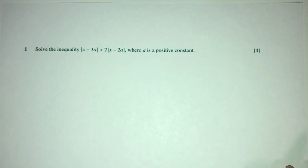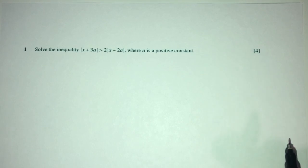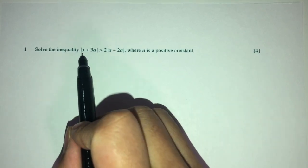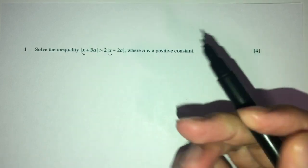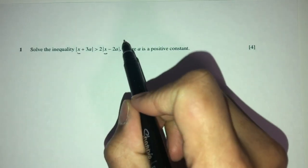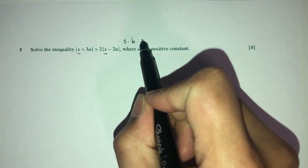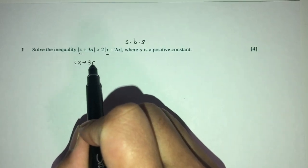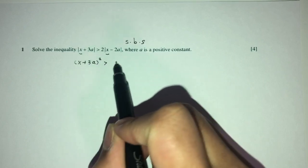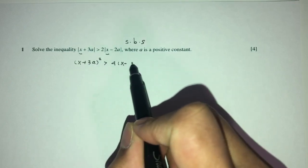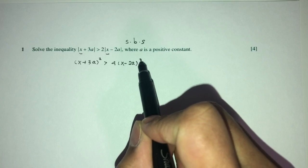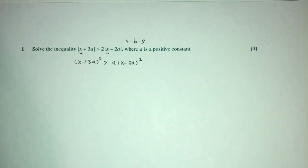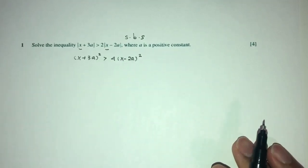Question number one asks us to solve an inequality where A is a positive constant. By observation, we have x on both sides, so we will square both sides. That gives us (x + 3a)² > 4(x − 2a)². By squaring both sides, we remove the modulus — that's why we do that.